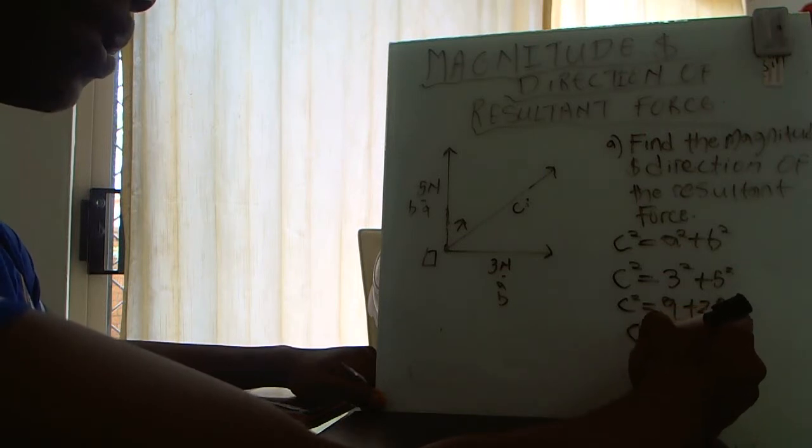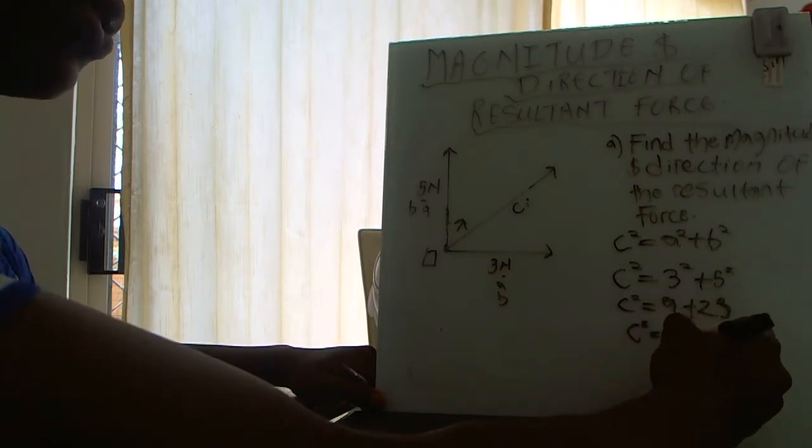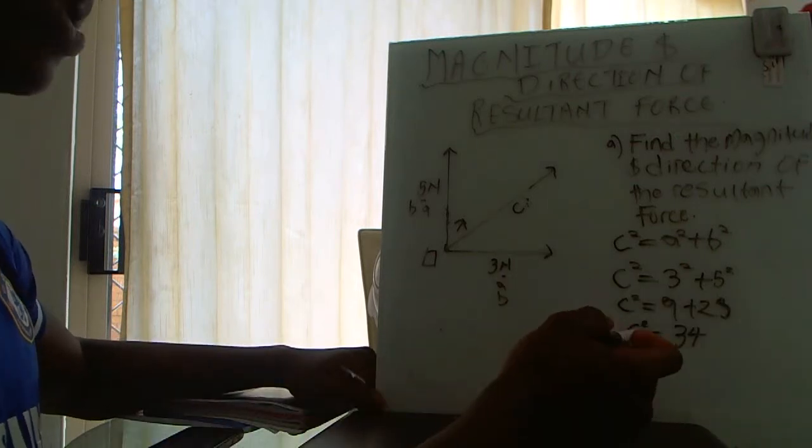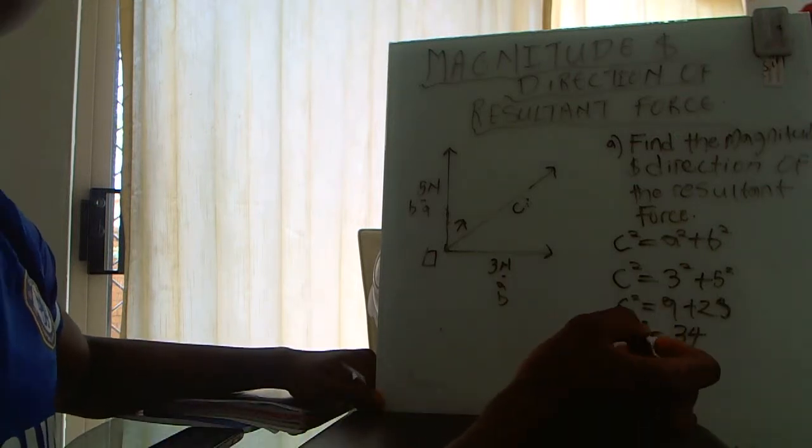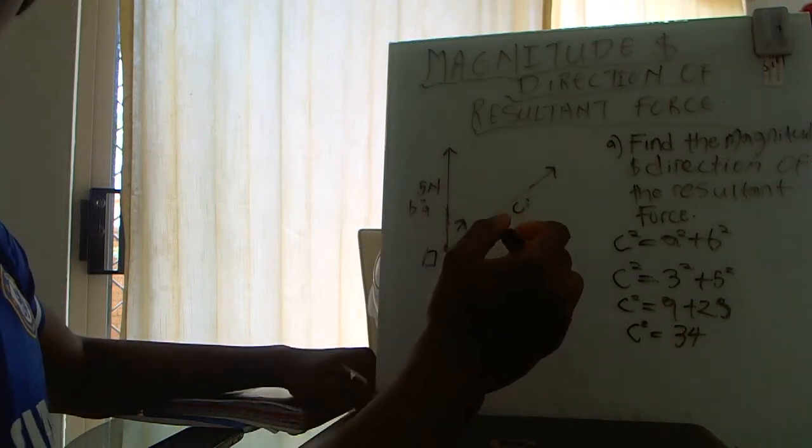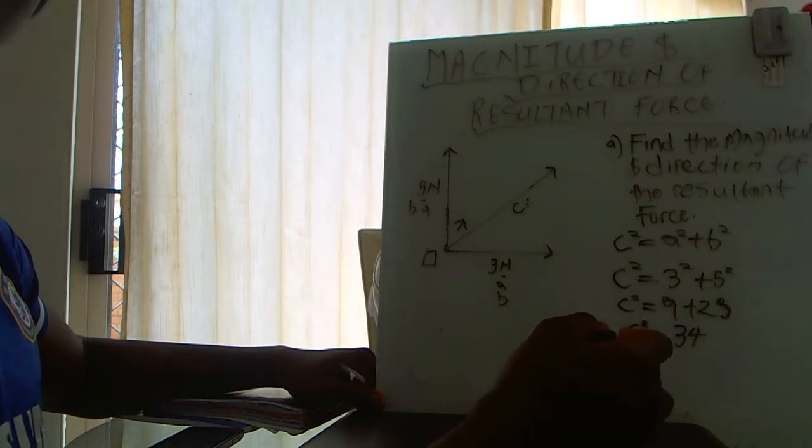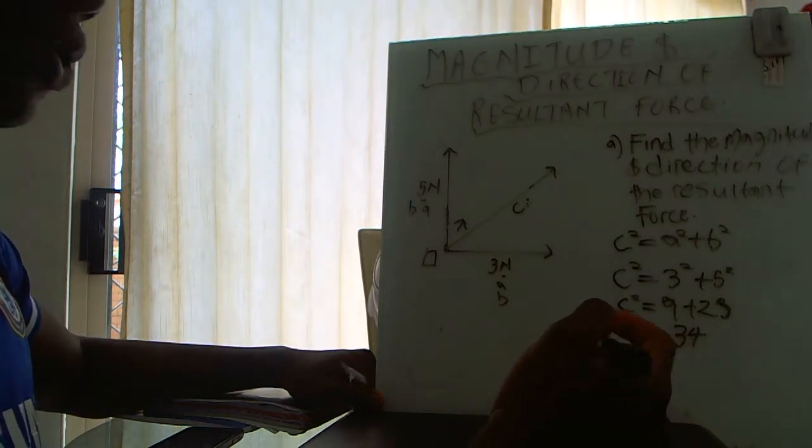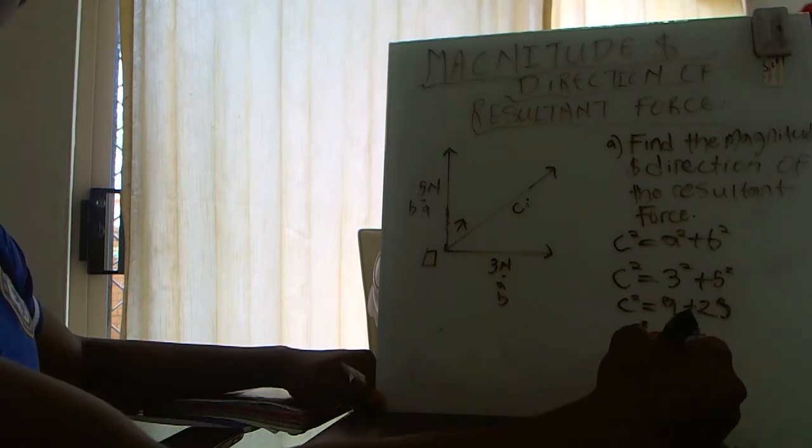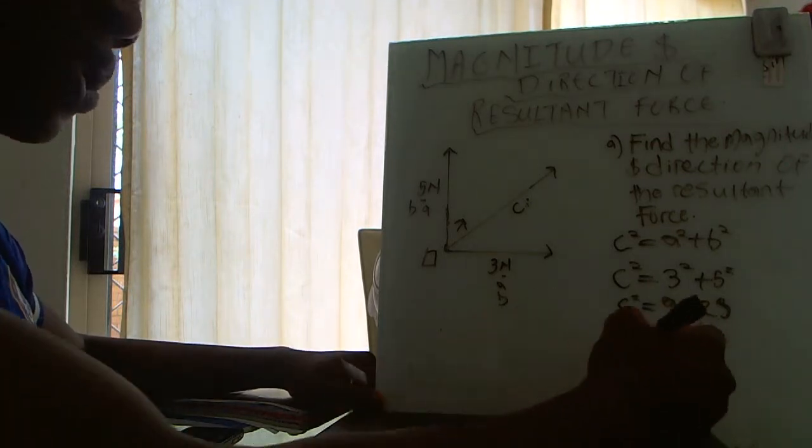We have c squared, but what we're looking for isn't c squared, we're looking for c. So how do you make c squared turn into c? Well, you simply do that by taking the square root of both sides.